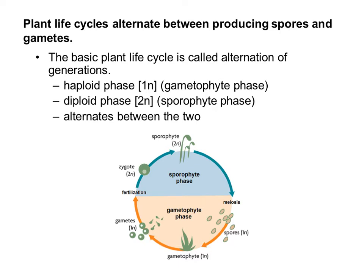It alternates between the two. This can be really confusing because in humans, our only haploid cell is the gamete — so sperm and egg — but plants actually can live in a haploid stage, in a 1N stage, and that's what's kind of confusing about this.